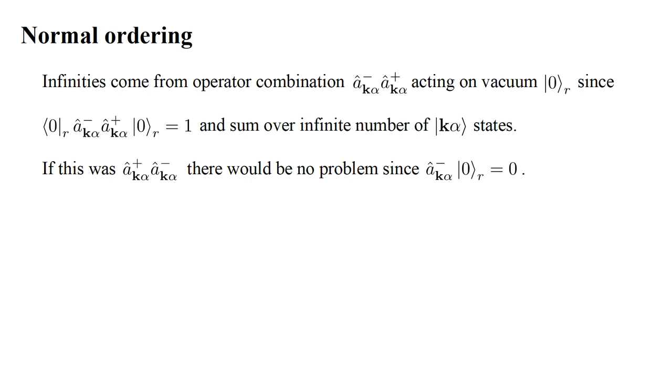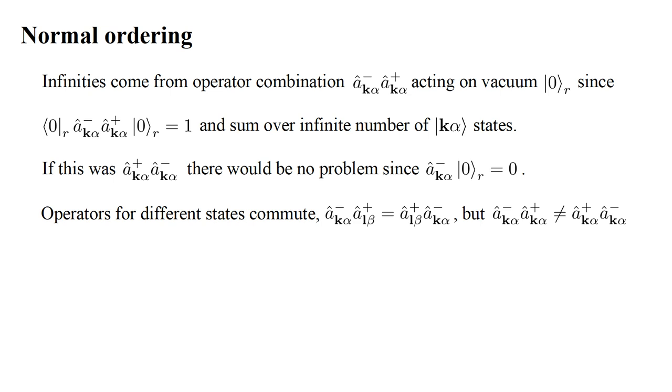If these operators were in the opposite order, there would be no problem, since the destruction operator operating on the vacuum state vanishes. Now, operators for different photon states commute, but operators for the same state do not. Instead, as we saw in the first video in this series, the commutator of photon destruction and creation operators is one. And from that it follows that a-hat minus a-hat plus equals a-hat plus a-hat minus plus one. That substitution would result in the same expectation value as before.